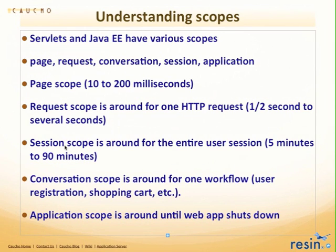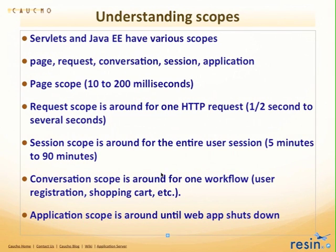Session scope is usually where you store information about the current user or that current user session, and it usually lasts between five and 90 minutes. Conversation scope is around some subset of the session, usually a single workflow like a user registration form or a shopping cart, lasting less time than a session. Application scope is around as soon as you deploy and start that web application until it shuts down.